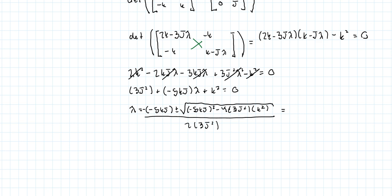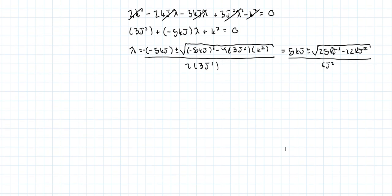That gives us λ = [5KJ ± √(25K²J² - 12K²J²)] / (6J²) = [5KJ ± √(13K²J²)] / (6J²) = [5KJ ± √13 · KJ] / (6J²).